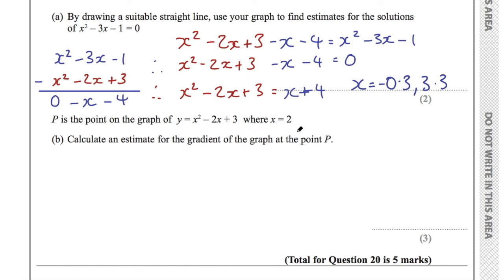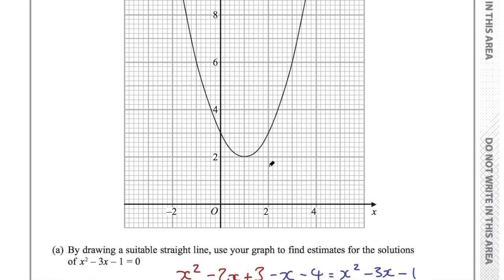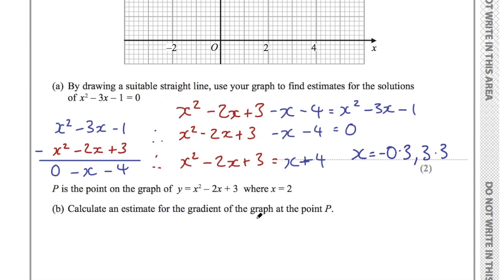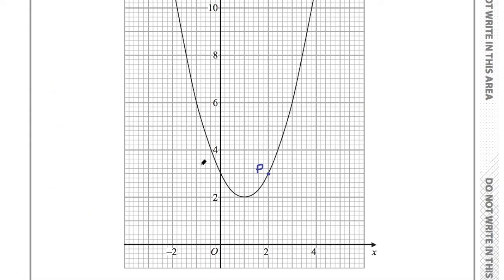Let's find point P on the graph where x equals 2. Going up to the graph, here's x equals 2, and that point is P. To estimate the gradient of a curve, we draw a tangent to the curve at that point and then find the gradient of the tangent — a straight line just touching the curve at P. We need to be as accurate as possible with a ruler.